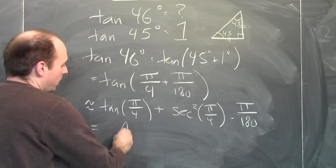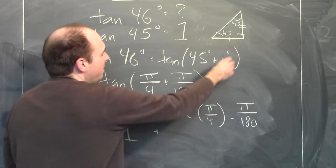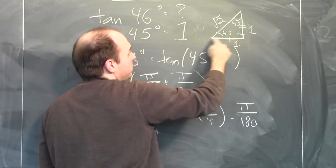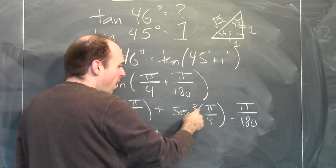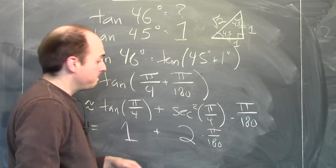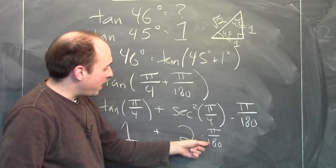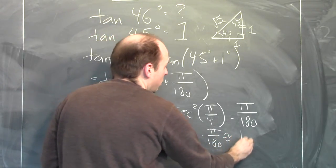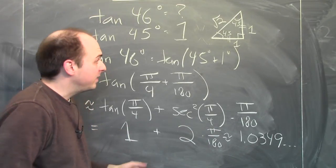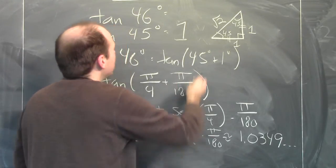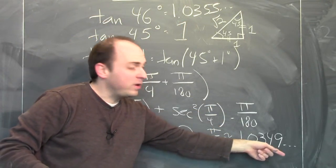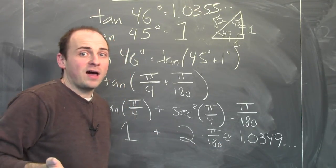I know the tangent of pi over 4 is 1. What's secant squared of pi over 4? If the legs have length 1, by the Pythagorean theorem the hypotenuse is square root of 2, so secant of pi over 4 is square root of 2, and secant squared is 2. So the approximation is 1 plus 2 times pi over 180, which is approximately 1.0349. The actual value of tangent of 46 degrees is about 1.0355 — very close. We successfully used the derivative to approximate tangent of 46 degrees.